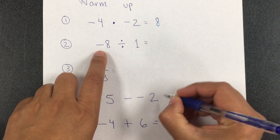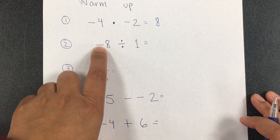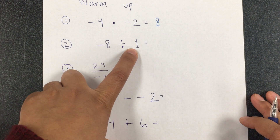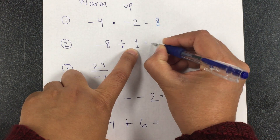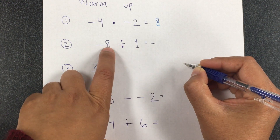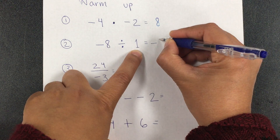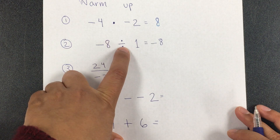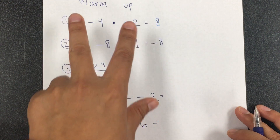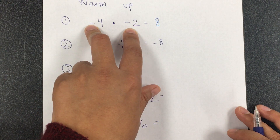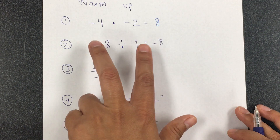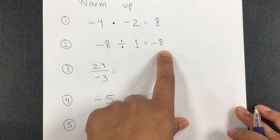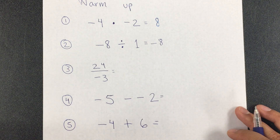Remember to try before you see the answers. In division, negative divided by positive is negative, and 8 divided by 1 is 8. For multiplication and division, the rule is the same: if the signs are the same, the answer is positive; if the signs are different, the answer is negative.